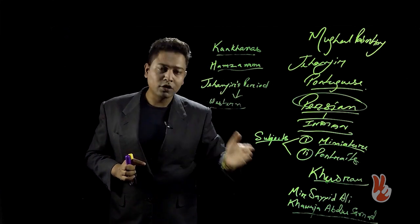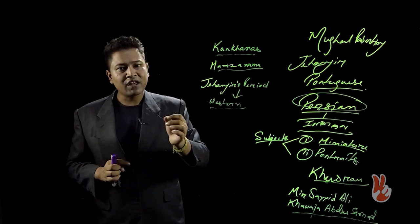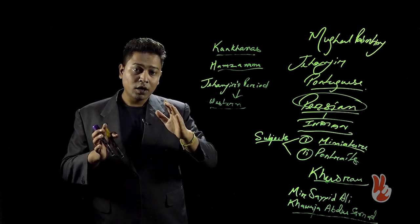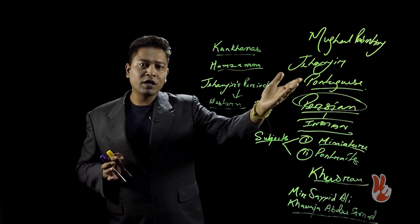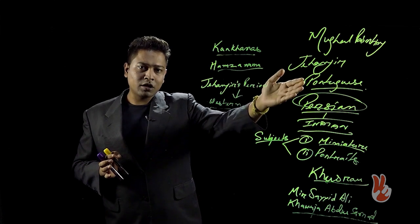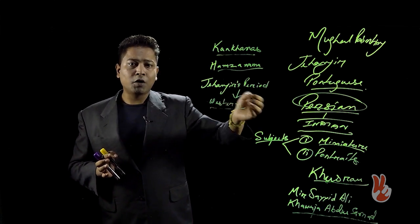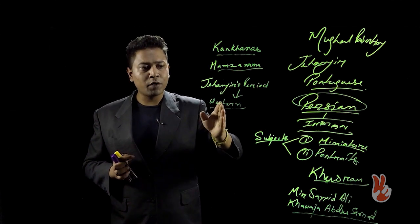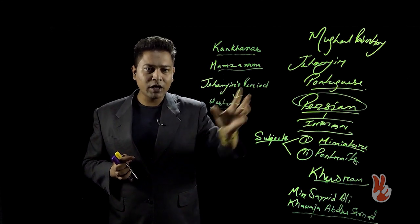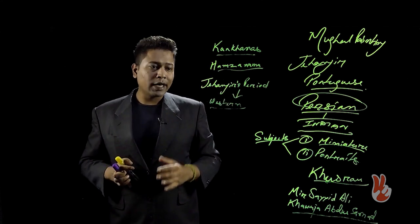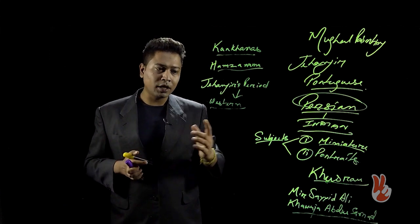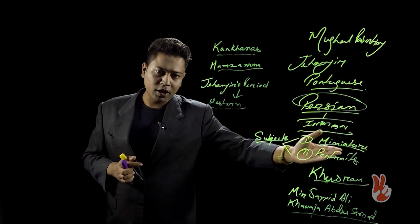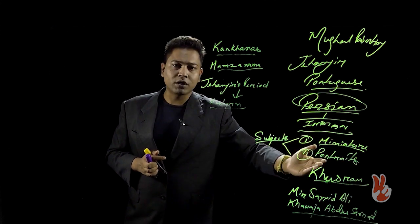The influence of the Portuguese was present during the period of Akbar also. The very first paintings gifted to the Mughal emperor were those given by the Jesuit priests belonging to the Portuguese community. So Portuguese influences existed before Jahangir, but Jahangir incorporated these influences into the art form of painting. As we have already said, he is a great connoisseur of painting and put greater emphasis on portraiture.